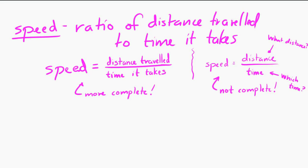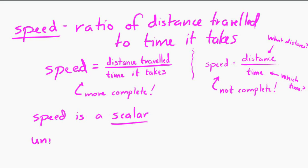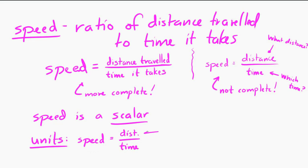Speed is a scalar, and it has units which we can figure out if we look at that equation. Speed is equal to distance divided by time. Distance has units of meters, and time has units of seconds, so the units of speed are meters per second.